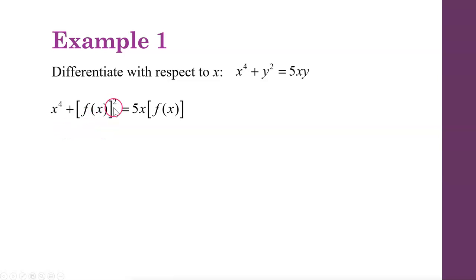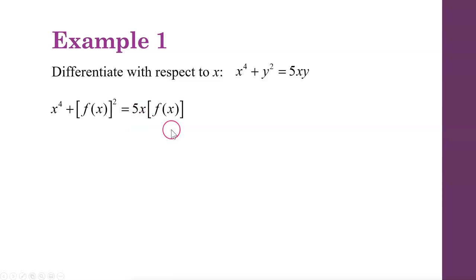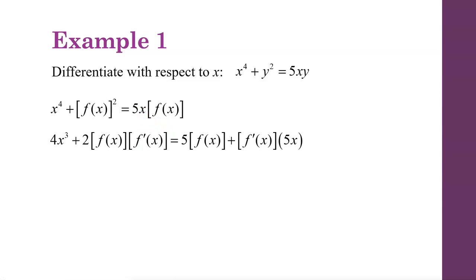When we take the derivative of f(x) squared, we're going to make sure we follow the chain rule. So the derivative of a function taken to the second power is 2 times that function to the first power, multiplied by the derivative of the inside. On the other side of this equation, we do have to use the product rule. We have 5x multiplied by f(x), so we take the derivative of 5x, which is 5, multiplied by f(x), and then add f prime of x times 5x.